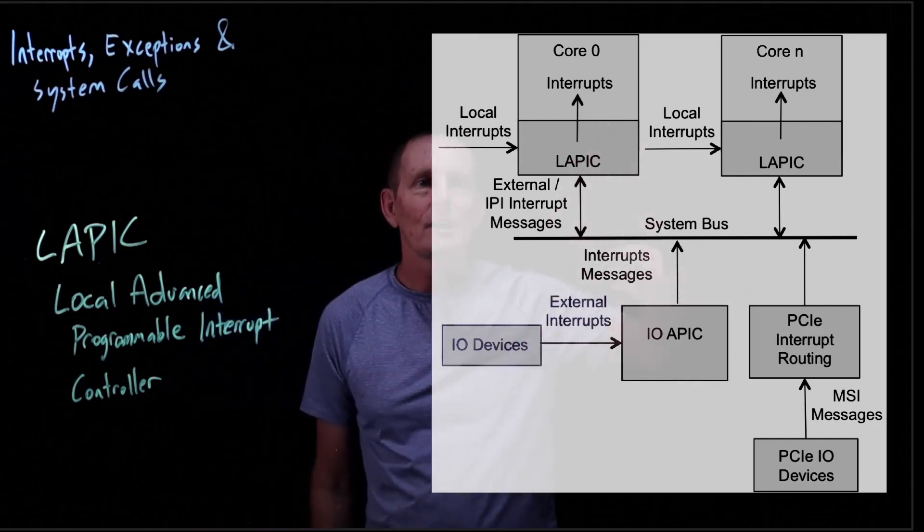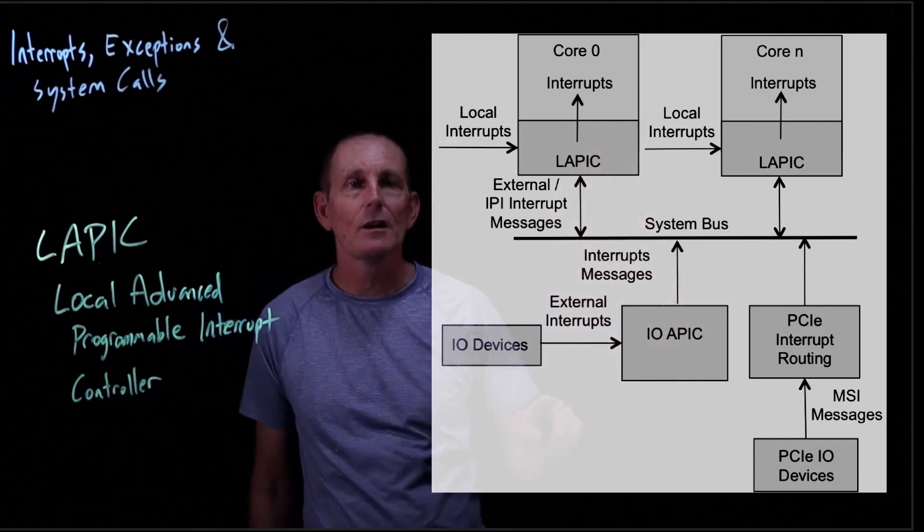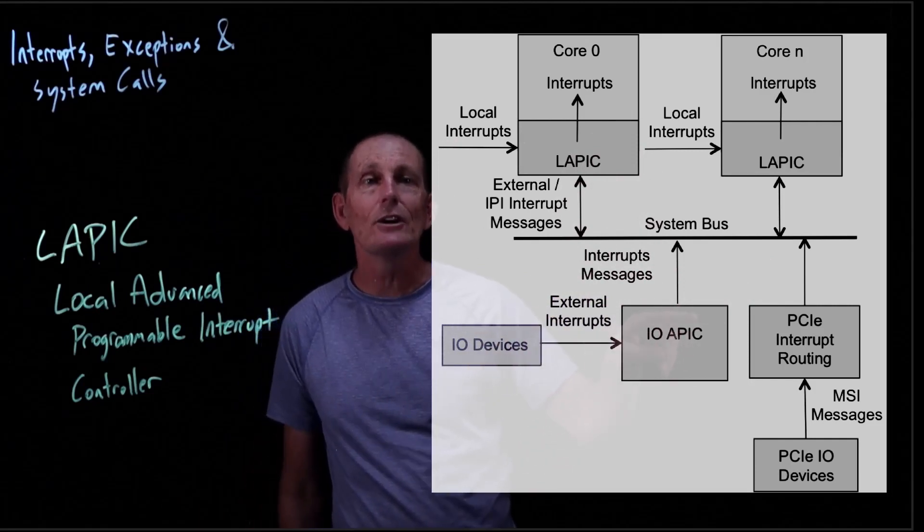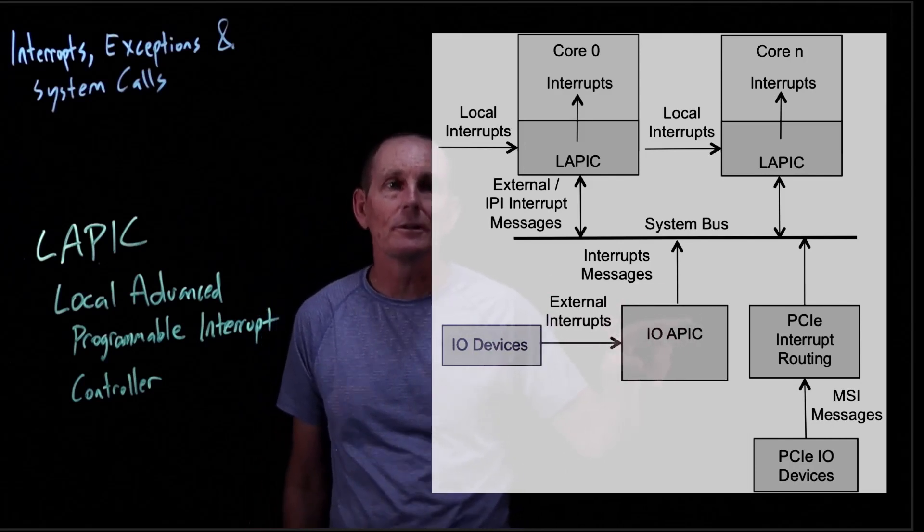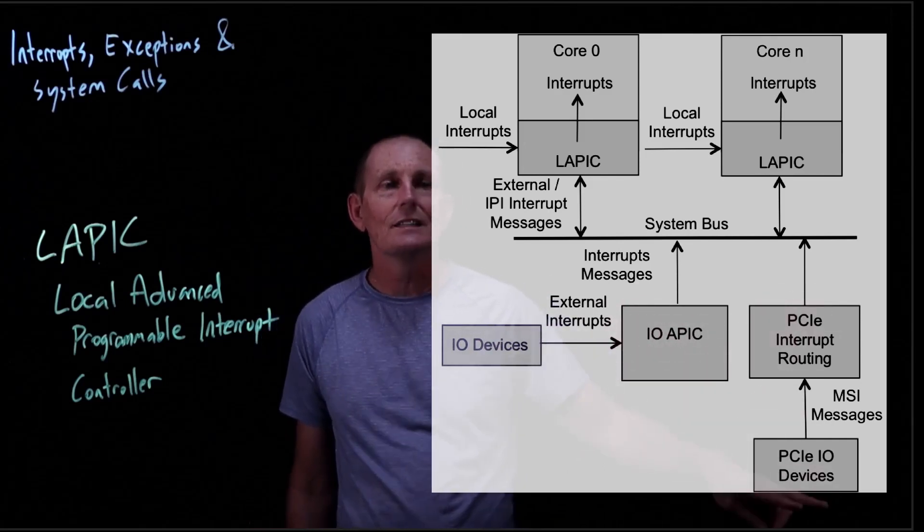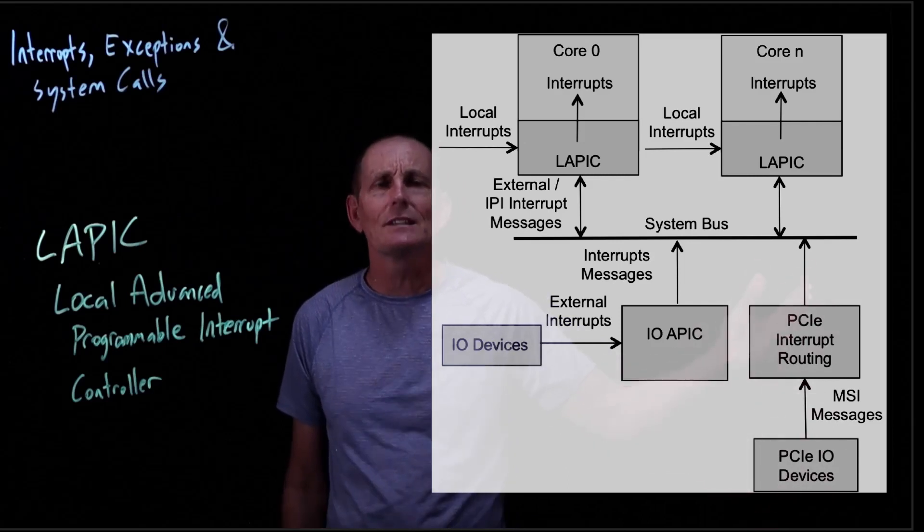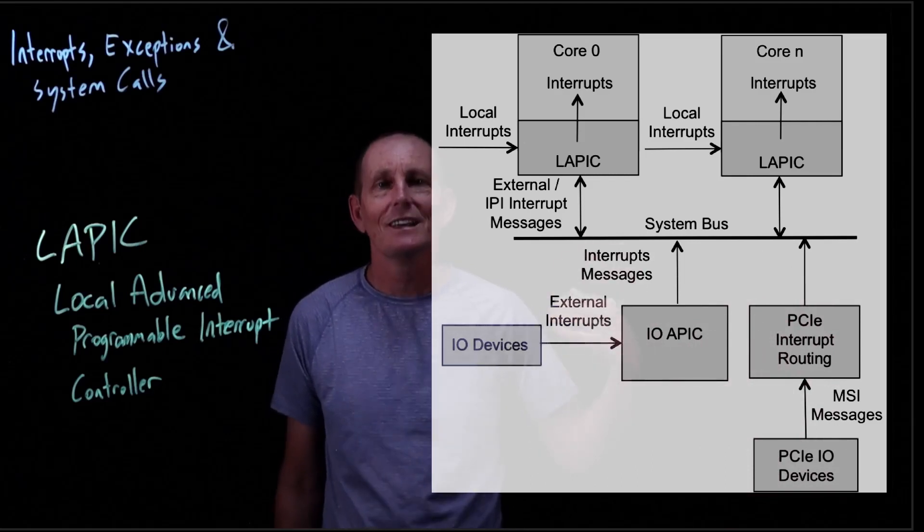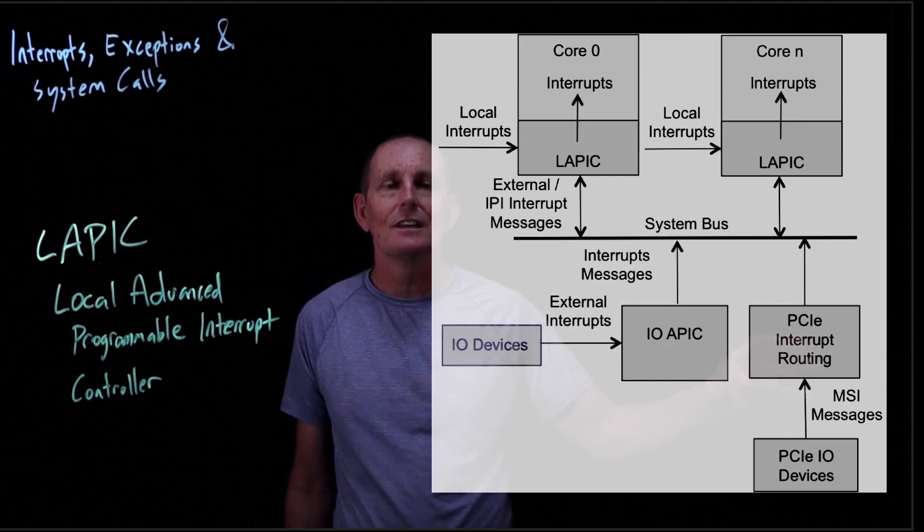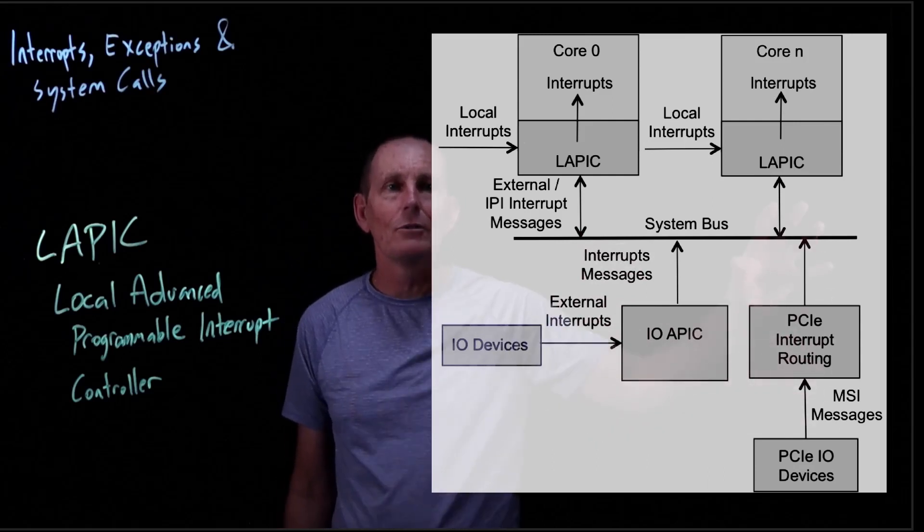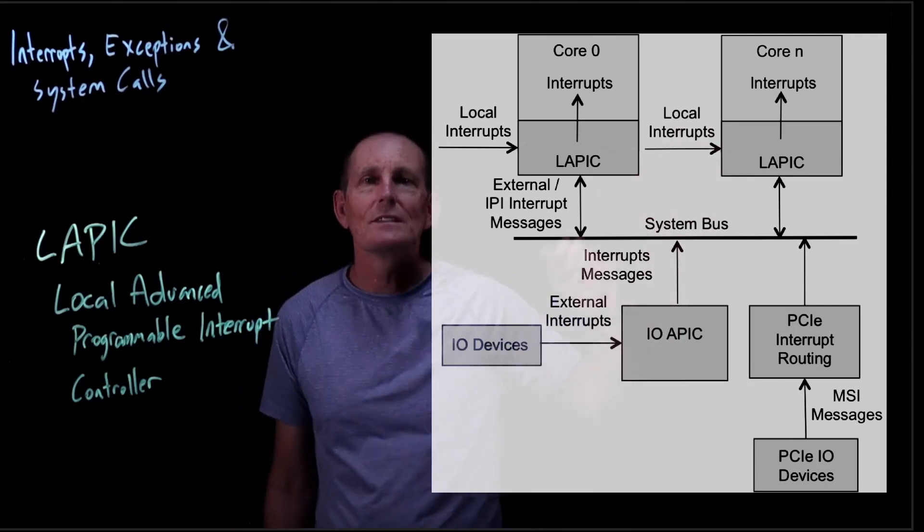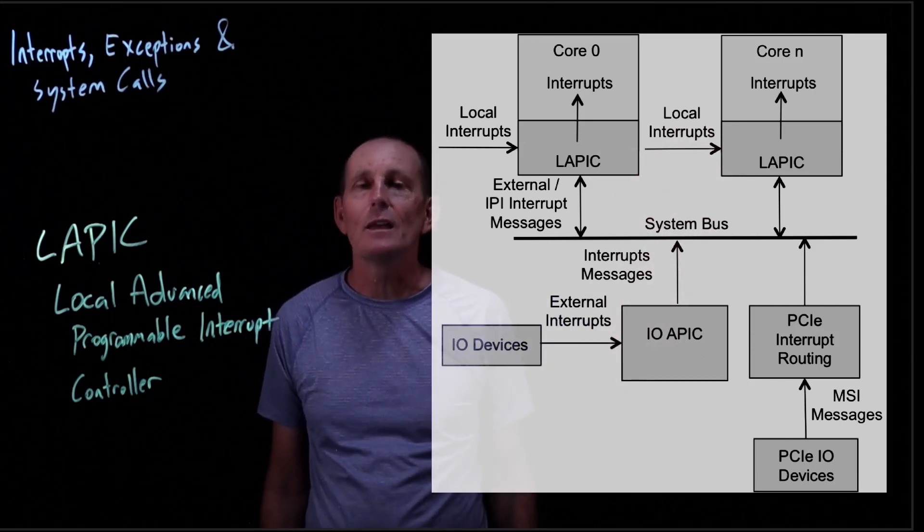There's communication across the system bus because there are external interrupts from IO devices. An IO device can generate an interrupt that goes to the IO APIC. For PCI devices, it doesn't actually use an APIC—it uses MSI messages that go across the bus saying an interrupt is desired. That will eventually get routed to a particular CPU. We don't normally have to care about that too much, other than doing some programming of these APICs.